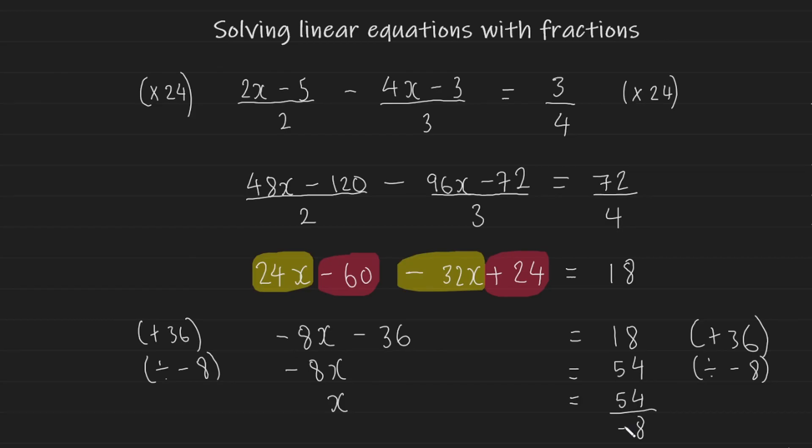So once again, if the question does not specify how you should leave your answer, this is perfectly fine. However, just out of good form, instead of having the negativity on the denominator or the numerator, you could just put it to the side like this. 54 over 8. And there it is. That is how you solve a linear equation with fractions where all of the terms have a denominator.